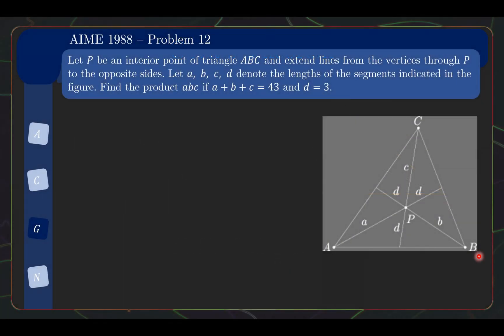What's even more amazing is you can use this method to provide very simple solutions to Olympiad problems. Some of these problems can be quite hard without this method. Let's take a look at two examples. Firstly, it's an AIME problem. We let P be an interior point of triangle ABC and extend the lines from vertices through P to the opposite sides. Now let A, B, C and D be the lengths of the segments shown here. In particular, these three lengths are supposedly all equal and they are equal to D. The problem here is we need to find the product A times B times C if we are given that A plus B plus C equals 43 and D equals to 3.